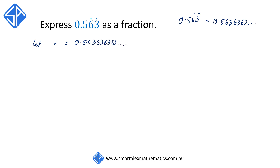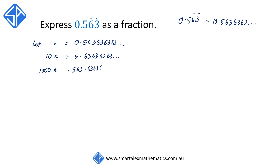Our aim is to make sure that we're able to line up the digits after the decimal point. So we're going to first multiply x by 10, and this is going to give us 5.63636363. And again, we're going to multiply x by 1,000. This moves the decimal point three places to the right, so that we get 1,000x = 563.636363...